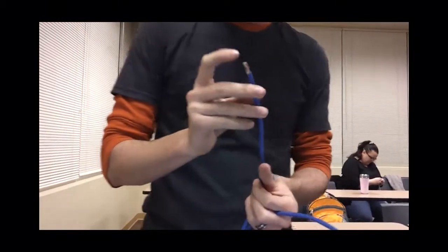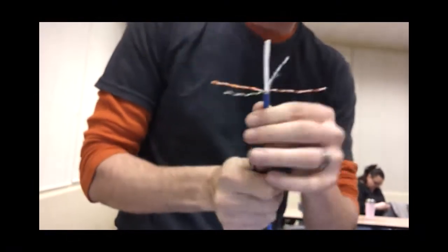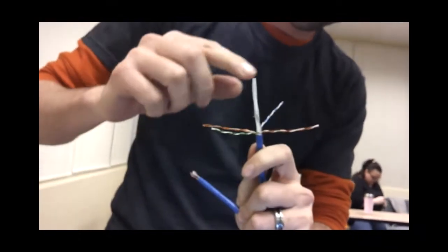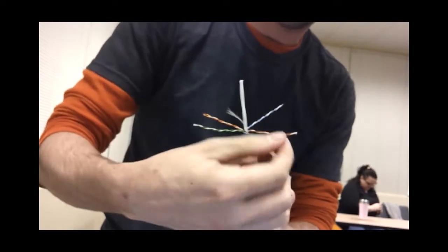After you get that, on a CAT6 cable you will notice when you cut it open there, you're going to get this little plastic piece here in the center and the twisted pairs here.